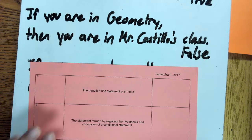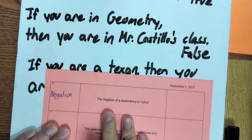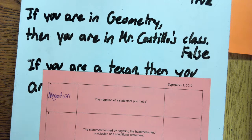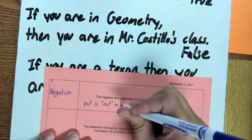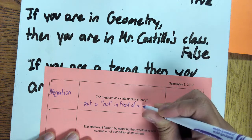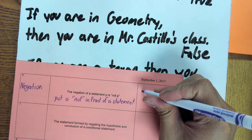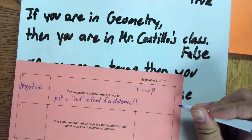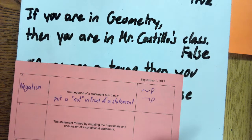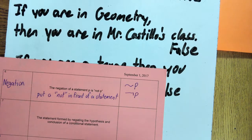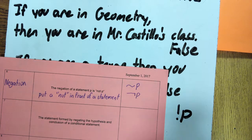Next up, our next term is negation. The negation of a statement P is not P. The way I would describe it is: put a 'not' in front of a statement. The notation for negation — we have two different notations. Either use the squiggly line, we call it a tilde, so not P. Or we can use a symbol that looks like a minus sign with a tail at the end, meaning not P. For those taking computer science, you may also see the notation written as an exclamation point followed by P — in computer science that also means not P.